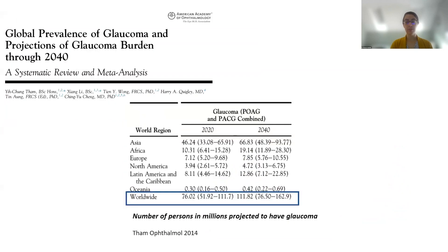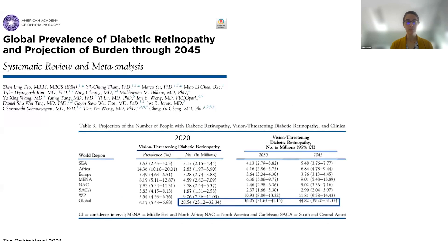Similarly, looking at the burden of glaucoma globally, we're expecting 35.8 million additional cases of glaucoma worldwide. That burden is particularly heavy in Asia and Africa, but is being seen across the globe. We can also look at the global prevalence of diabetic retinopathy, including vision threatening diabetic retinopathy, where we're expecting an additional 16.3 million cases. There are different distributions of where this will be most prevalent, but globally this is concerning.